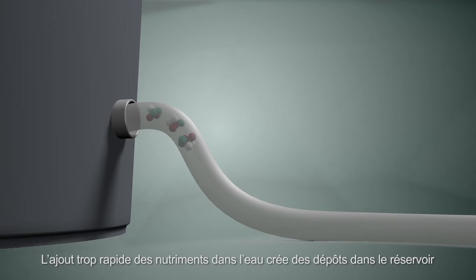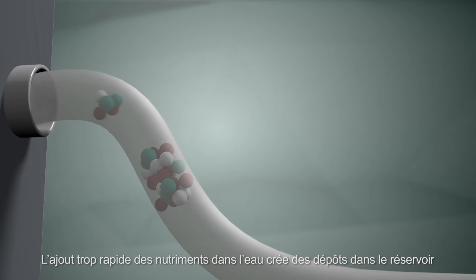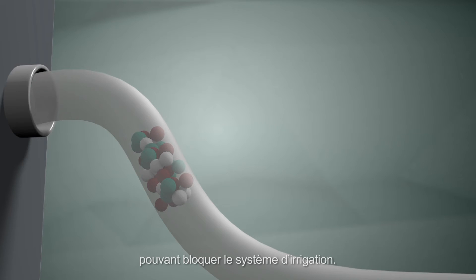By adding these feeds too quickly to the water, deposits can form in the nutrient tank and cause blockages in your irrigation system.